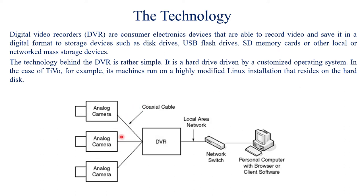Digital video recorders can be used over a local area network to your personal computer with browsers or client software. Analog cameras are connected to the digital video recorder, which records all content in digital form. It has an analog-to-digital converter and storage on which the digital data is stored, and then it is sent to the local area network through network switches to personal computers.